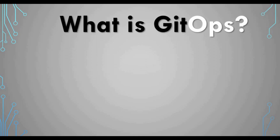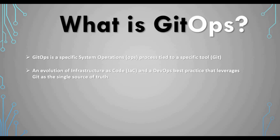Now that you understand the challenges with normal Infrastructure as Code, let's talk about what GitOps is. GitOps is a specific system operation process tied to the tool called Git — 'Git' plus 'operations.' It is an evolution of Infrastructure as Code and DevOps best practices that leverages Git as a single source of truth. That's the main concept: Git is your single source of truth for infrastructure code.